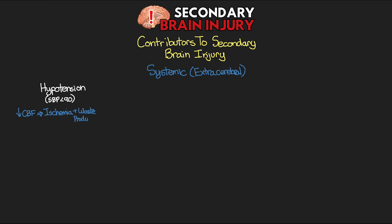Thinking back to how we calculate cerebral perfusion pressure — if we decrease blood pressure and essentially decrease our MAP, this is ultimately going to lead to a decreased CPP. We're going to have less ability to perfuse brain tissue, and this can really lead to an increase in mortality, especially when patients have multiple episodes of hypotension. It's really important that we do what we can to prevent this from happening.